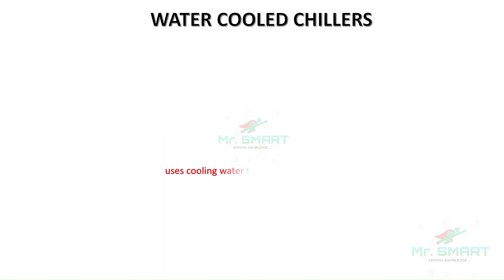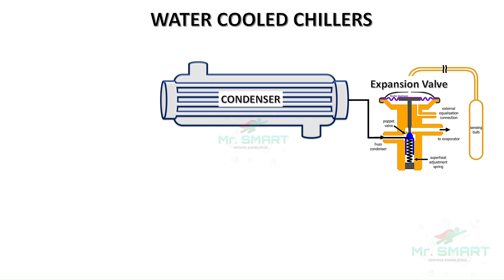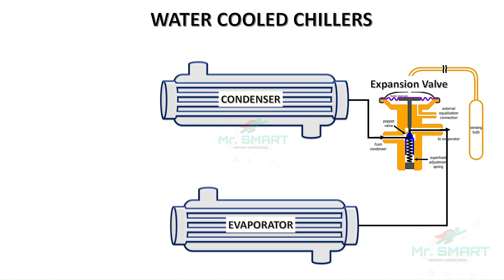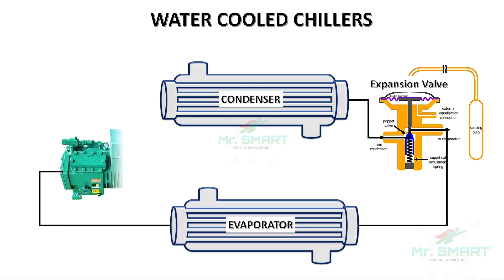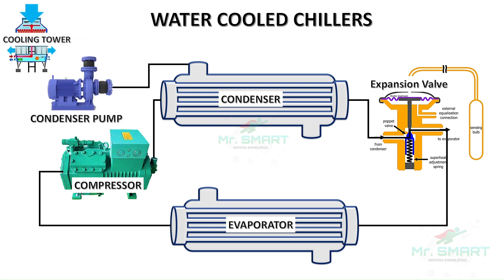Water-cooled chillers use water from a cooling tower to dissipate heat. They are more efficient, especially in larger facilities. The main components of a water-cooled chiller are the condenser, expansion valve, evaporator, compressor, condenser pump, and cooling tower.